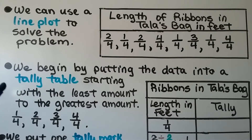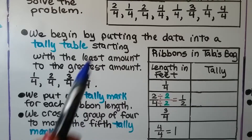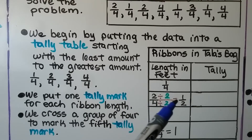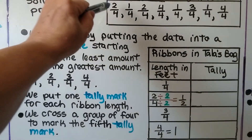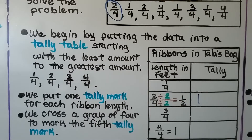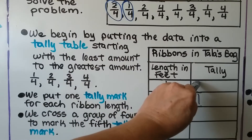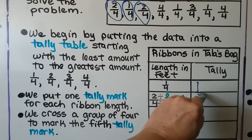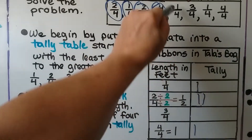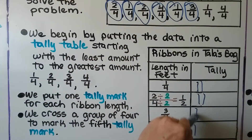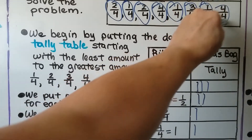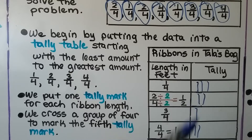We begin by putting the data into a tally table starting with the least amount, one-fourth, going to the greatest amount, four-fourths. We see she has a two-fourths — and two-fourths reduced is equal to one-half. So we mark the two-fourths and put a tally mark. We then mark one-fourth, another two-fourths, four-fourths, another one-fourth, three-fourths, another one-fourth, and another four-fourths. We just put one tally mark for each ribbon length, and we cross a group of four to mark a fifth tally mark if we've got five.